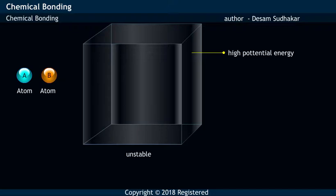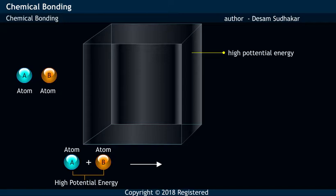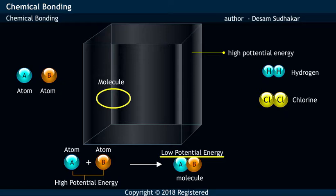and rarely capable of individual existence. Thus, atoms in order to reduce their potential energy combine with each other and form molecules like hydrogen, chlorine, etc.